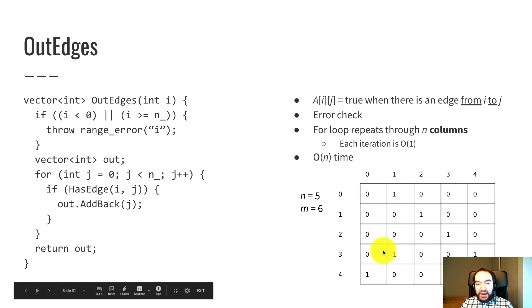And if a[i][j] is true, then add that j to my list. So we're returning a vector of ints. We're given an i, a row number. We've got the same range check. If i is an illegal index, we throw an exception.